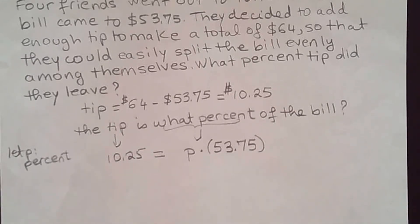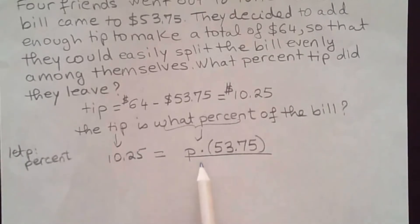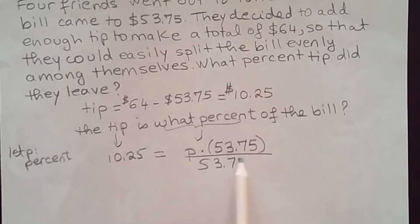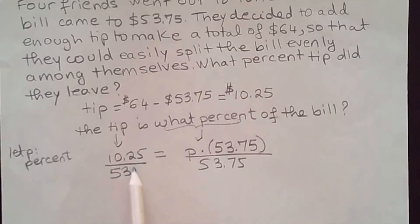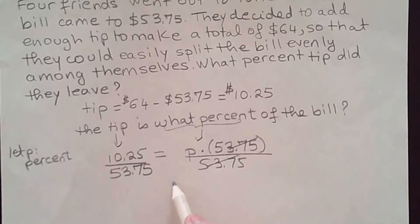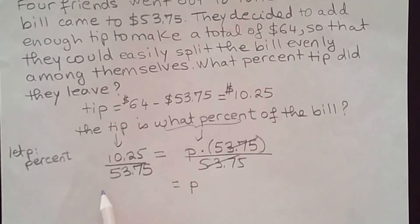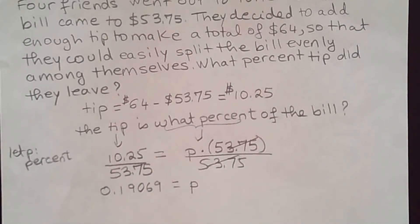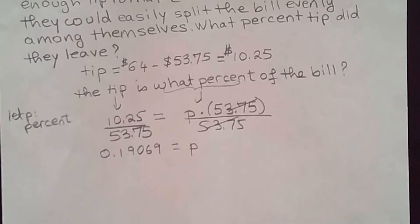Now you need to solve for p, so you have to divide both sides by 53.75. This cancels with this, and p is equal to — you can use your calculator to divide 10.25 by 53.75 — and you should get 0.19069.